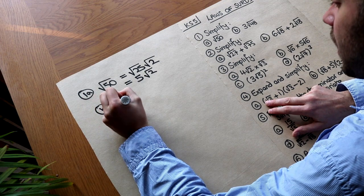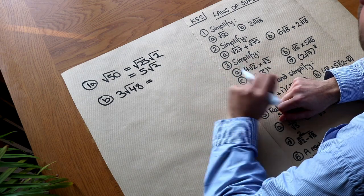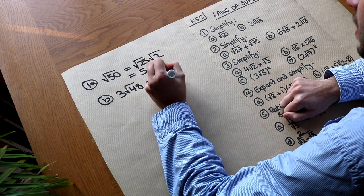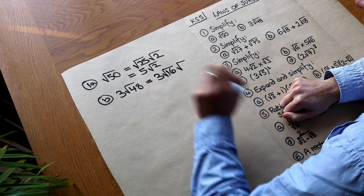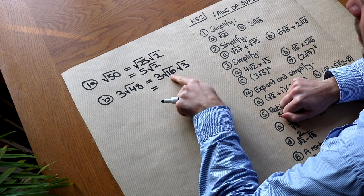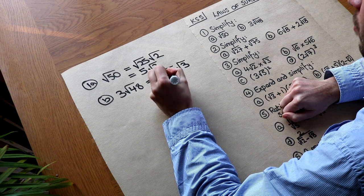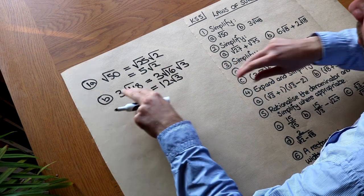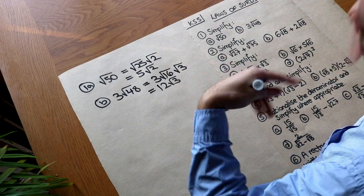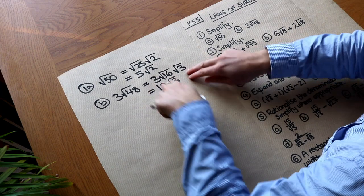For 3 root 48, we again look for the biggest square number that goes into 48. Well, 16 is a square factor of 48. So we write it as 3 times root 16 times root 3, since 16 times 3 is 48. The square root of 16 is 4, and 3 times 4 is 12, so it's 12 root 3. In general, when you multiply two surd expressions together, we can multiply the surds together — like root 2 times root 3 is root 6 — and the non-surds also multiply.